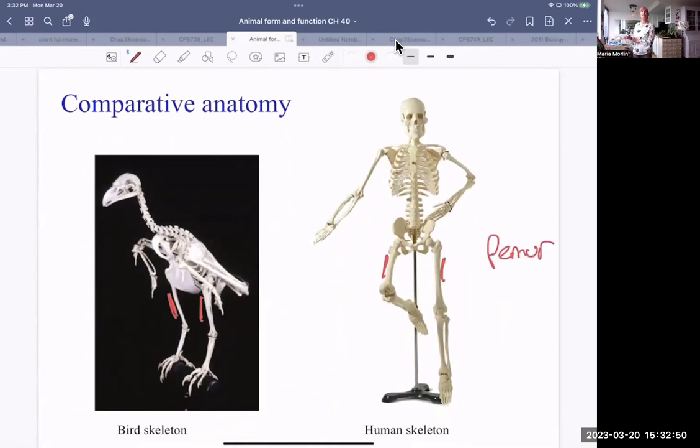Herons and humans both have femurs. Herons, like most birds, can walk as well as fly. This isn't actually a heron, by the way, this one. This is another kind of bird. But I wanted to have just a skeleton. Also, the tibia and fibula, they're also homologous. So they have those for walking.